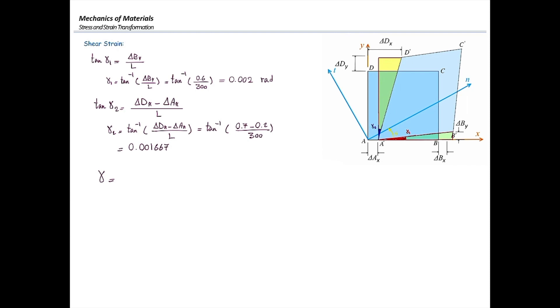And the total strain at that point would be sum of these two values. Why? Because both of them are showing the change in the angle where they are getting shorter. The angle is getting closer. So in that case, I'm going to add them up. And the total angle would be 0.003667 radians.